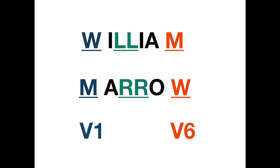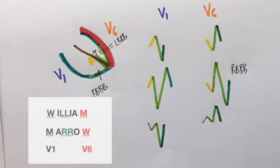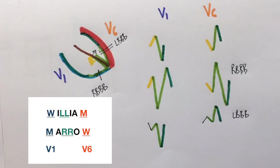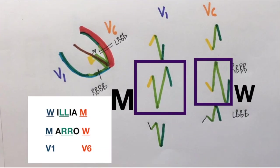I remember this by the mnemonic, William and Marrow. The first alphabet represents V1 and the last alphabet represents V6. If you look at this picture carefully, you can see how the QRS complex in V1 looks like a W and in V6 looks like an M in case of left bundle branch block. The QRS complex in V1 looks like an M for right bundle branch block and looks like a W in V6.